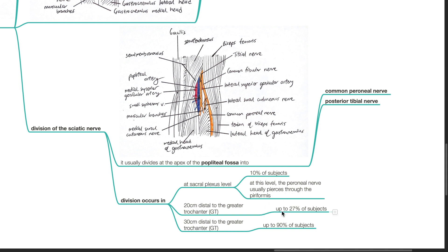In up to 27% of subjects, the division occurs 20 cm distal to the greater trochanter. In up to 90% of subjects, the division occurs at 30 cm distal to the greater trochanter.